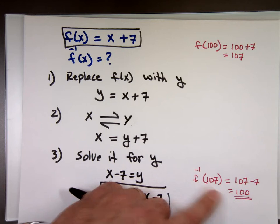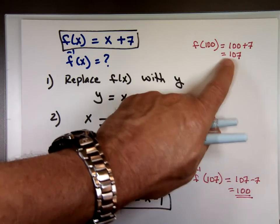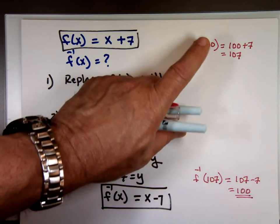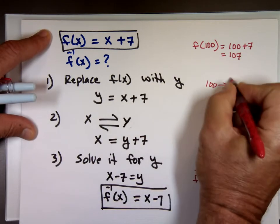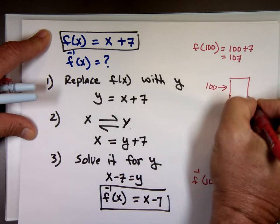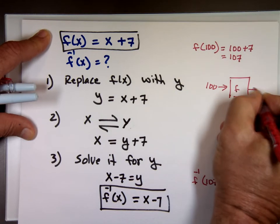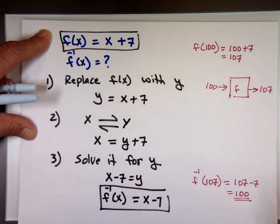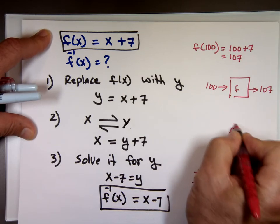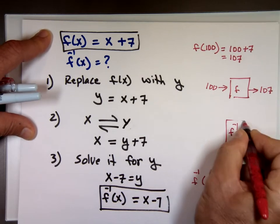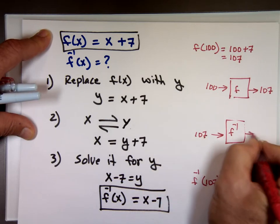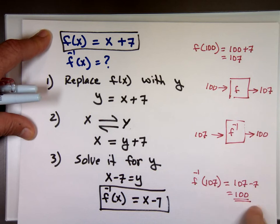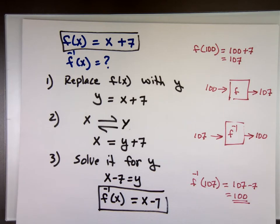So, this one, this function undid what that one did. We took 100. We fed it through this box. Notice what happened here. We have that 100. We fed it through this box. The f here. And that box gave me what? 107. Now, the inverse one says, hey, if you take the 107 now and feed it to me, you should get back your what? You're 100 and that's what we got. They cancel each other out.